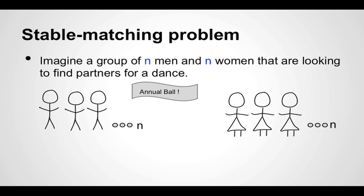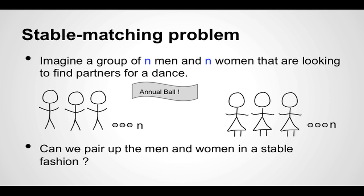Consider a group of n men and n women that want to find partners for dance. It's important that the number of men and the number of women are exactly the same. Can we pair up these men and women in a stable fashion? What is a stable fashion? To understand this, let's look at the example of an unstable matching.